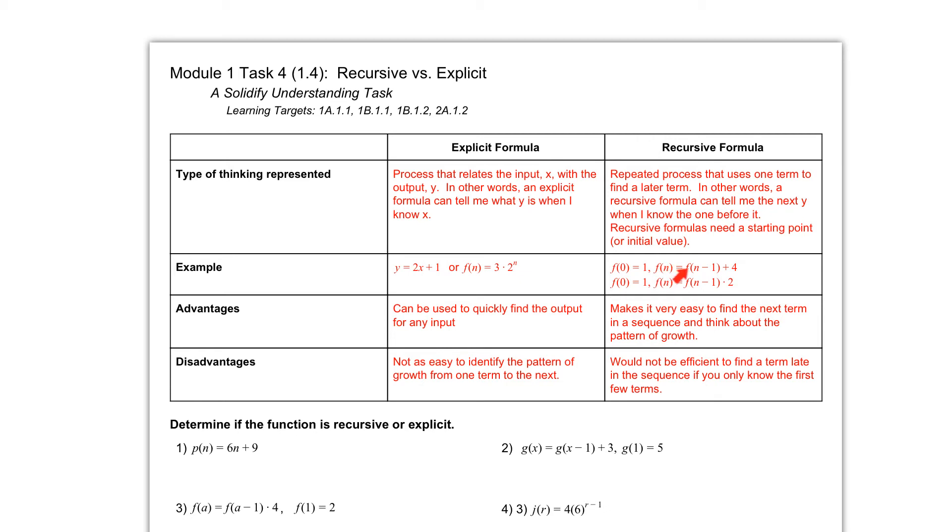So here, to find the nth term, we would need the previous one. This f of n minus 1 means previous. And then since we're adding for each time, this is arithmetic.